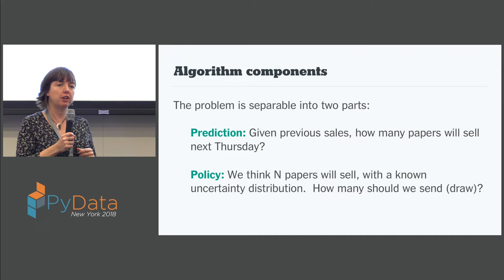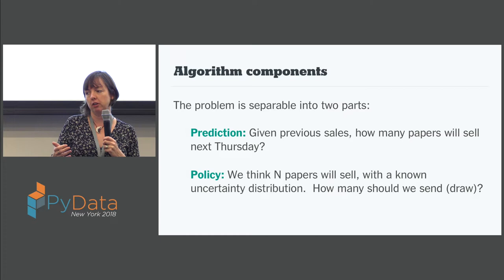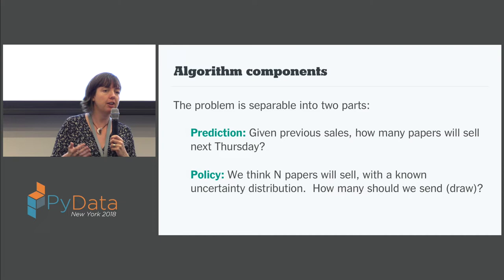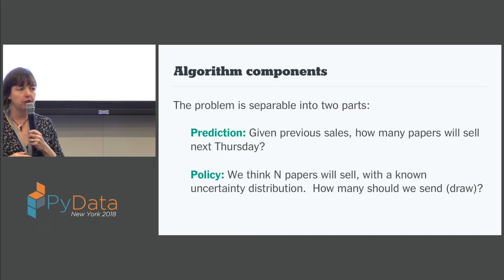If we think that we're really sure that four papers are going to sell, then we'll send four papers. But there's always some uncertainty associated with our demand prediction. And since we make a profit on the papers, it usually pays for us to send some extras in case the noise fluctuates up and we get an extra sale — making it worth it to err on the side of extra delivery. So the policy function determines exactly how many we should send based on our predictions.